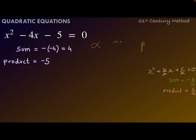We know that (alpha + beta) / 2 is the value exactly in between the two roots. The sum of the roots divided by 2, that is 4 divided by 2, gives us 2. The value 2 is exactly in the midway between the values of the two roots alpha and beta.